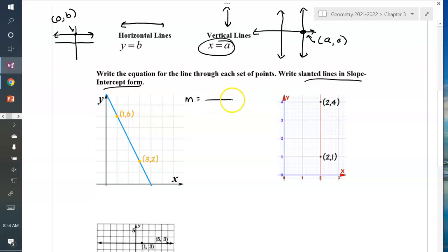So slope equals y2 minus y1 over x2 minus x1. So I'm going to call this one x1, that's y1, this is x2, that is y2. So 3 minus 6, that's y2 minus y1, over 3 minus 1. I get a negative 3 over 2. That's my slope.